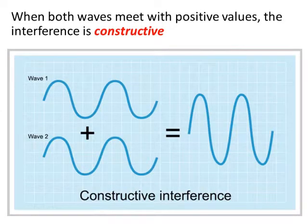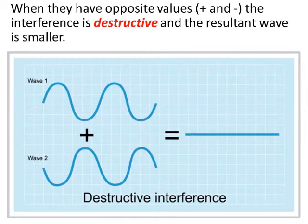So when they both meet with positive values, we get constructive interference. You add the sum of the displacements and you get a larger wave. When they are meeting, when they're opposite values, so if they're displacements or amplitudes if you want, they meet and they're an opposite, one's positive, one's negative, you'll get destructive interference. That's what happens in noise cancelling headphones.